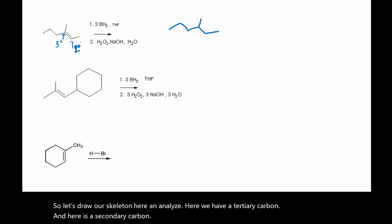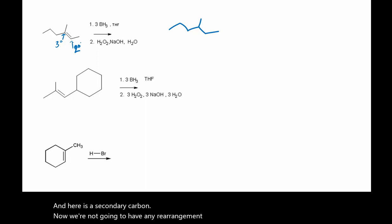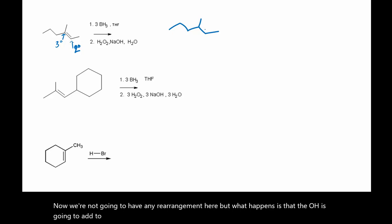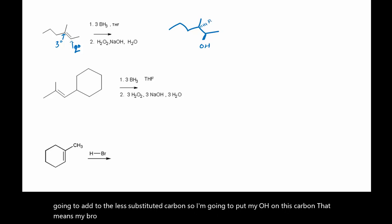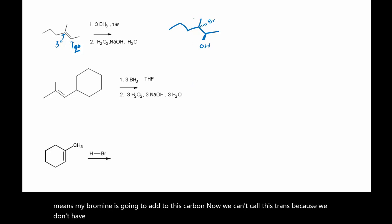Now we are not going to have any rearrangement here, but what happens is that the OH is going to add to the less substituted carbon. So I'm going to put my OH on this carbon. That means my bromine is going to add to this carbon. We can't call this trans because we don't have anything for it to be trans to, but we did just create two new stereocenters.